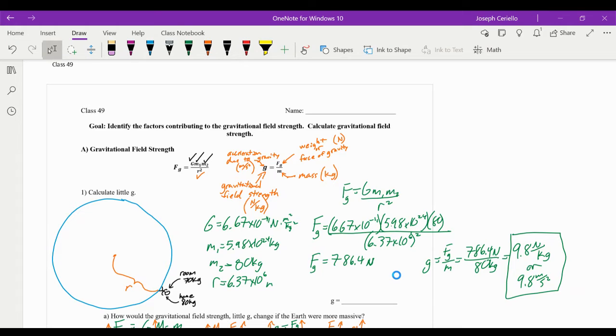Here we are in class number 49. It's the last class for quiz number 12. Our goal is to identify the factors contributing to gravitational field strength and calculate gravitational field strength.